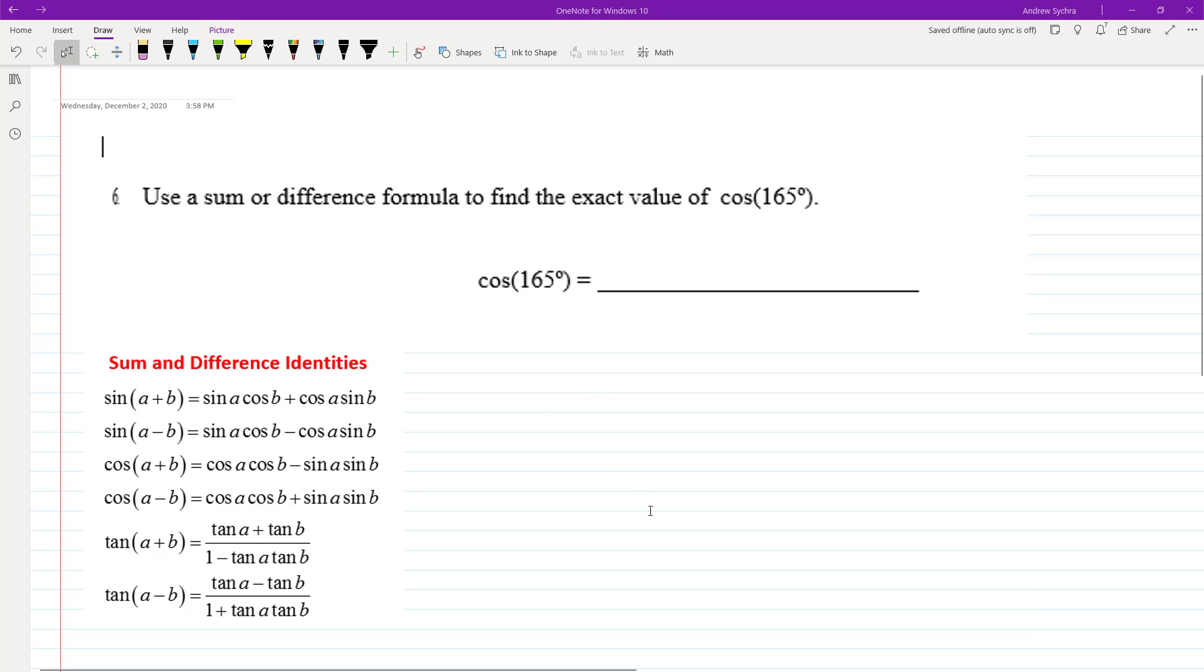Let's find the exact value of cos(165°) using a sum or difference formula. That means we can use either addition or subtraction to figure this out.